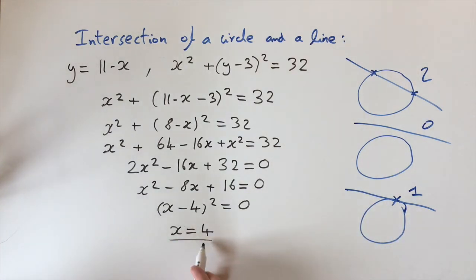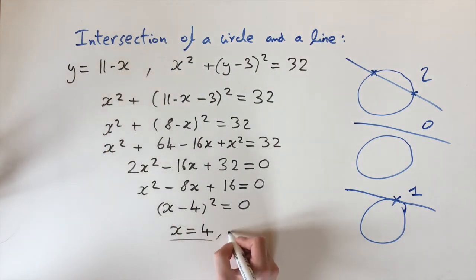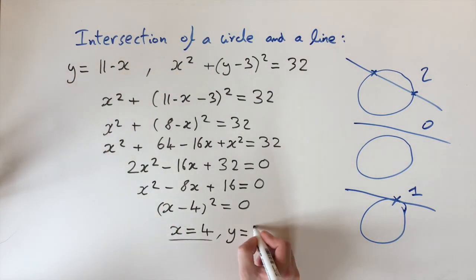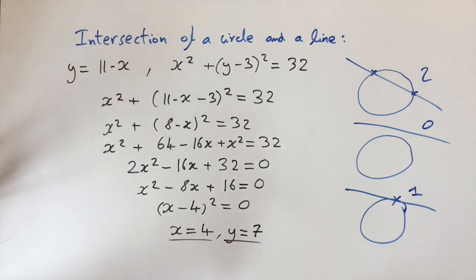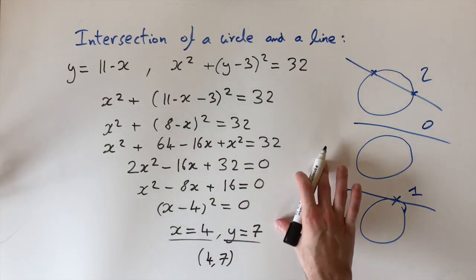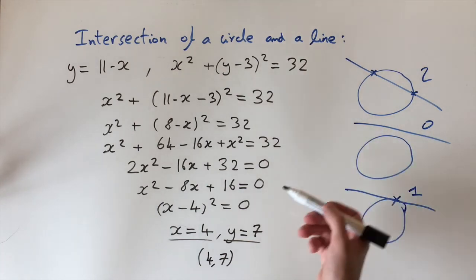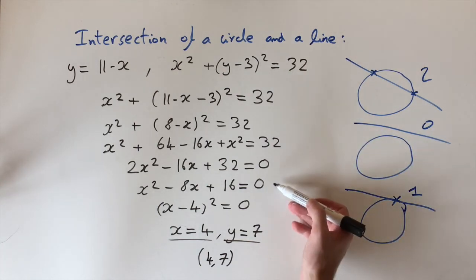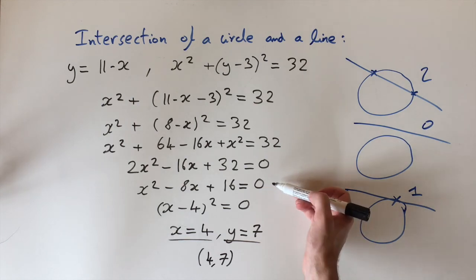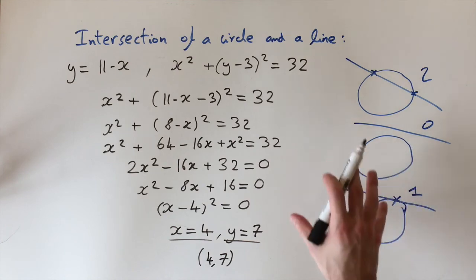To find the corresponding y component, we substitute x equals 4 back into the line equation and find y equals 7. So the coordinate of intersection is (4, 7). Obviously there are more examples — we haven't done the case of zero places of intersection, but it's the same method: you get to the quadratic, try to solve it, and see there are no solutions, which tells you there are no places of intersection.